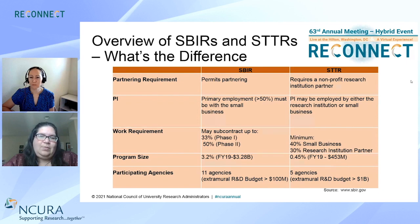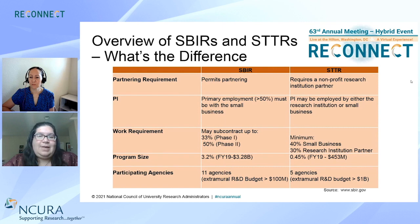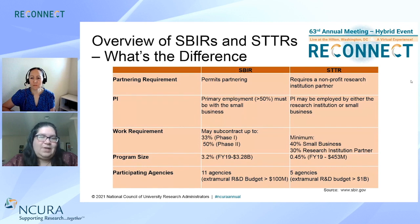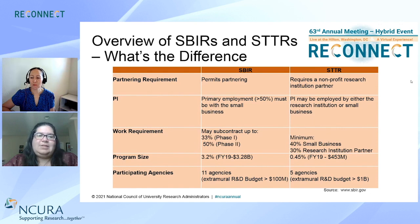For SBIR, the primary employment must be with the small business for the PI on the project. STTR allows the PI to be employed by either the small business or the research institution — I'll be getting back to this point later. For the work requirement under SBIR, the small business may subcontract to a research institution up to 33% for phase one and 50% for phase two. For STTR, 40% must be done at the small business, 30% at the research institution, and the remaining 30% can be done at either entity or further subcontracted out.